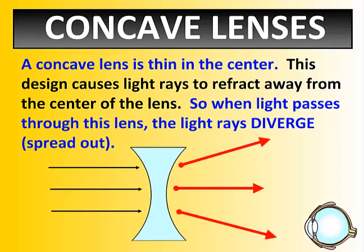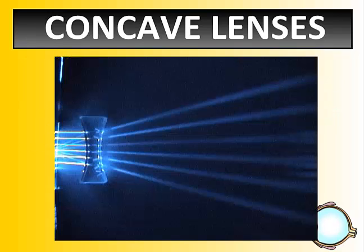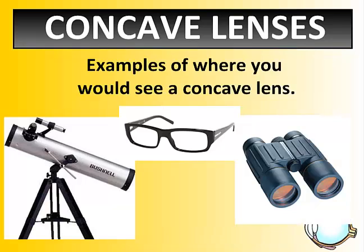Remember, a concave mirror brought light together, but concave lenses spread light out — they are opposite. If you pass light through a concave lens, the six beams of light strike the lens, pass through it, and spread out. These types of lenses are found in telescopes, glasses, and binoculars — all of which allow you to see things farther away.